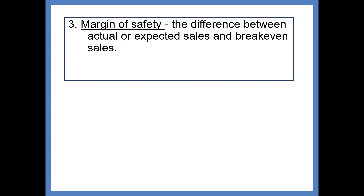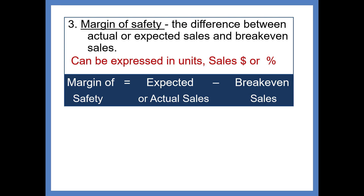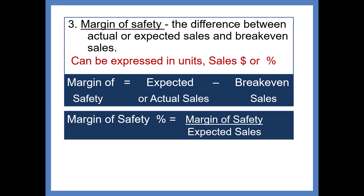The margin of safety is the difference between your actual or expected sales and the breakeven sales. Practically speaking, it is how much sales could fall before you start losing money. You can do this in hindsight based on actual sales or base it on expected sales if projecting. The margin of safety can be expressed in units, sales dollars, or a percentage. The formula is expected or actual sales minus breakeven sales. To express it as a percentage, take the margin of safety and divide by expected sales.